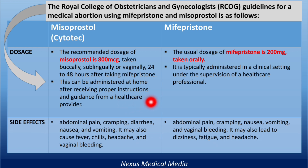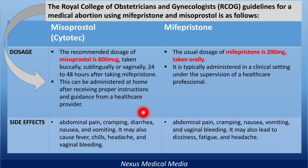What side effects should you be worried about? With Cytotec, it usually causes abdominal pain, cramping, diarrhea, nausea, and vomiting. It may also cause fever, chills, headache, and vaginal bleeding, as well as dizziness and fatigue.